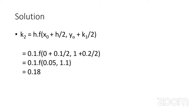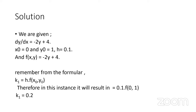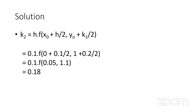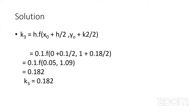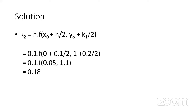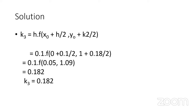For k₂, the formula is different from k₁. You compute f(x₀ + H/2, y₀ + k₁/2) = f(0.05, 1.1). Plugging y = 1.1 into -2y + 4 gives -2(1.1) + 4 = 1.8, and k₂ = 0.1 × 1.8 = 0.18. Note that k₁ and k₄ have different forms, while k₂ and k₃ are similar.